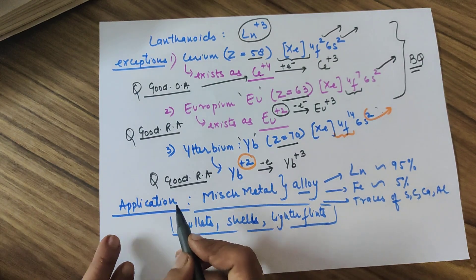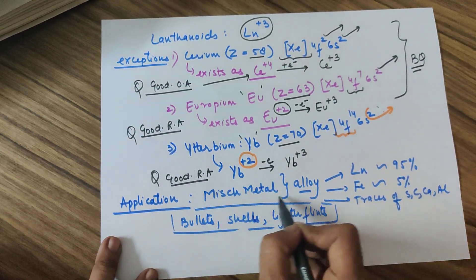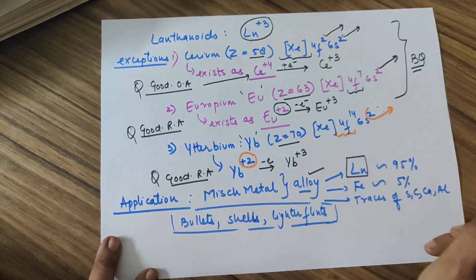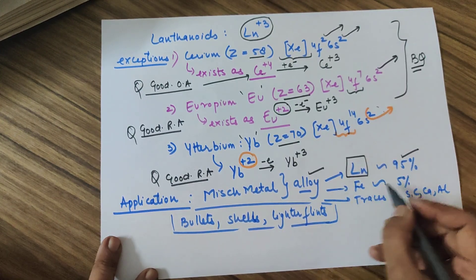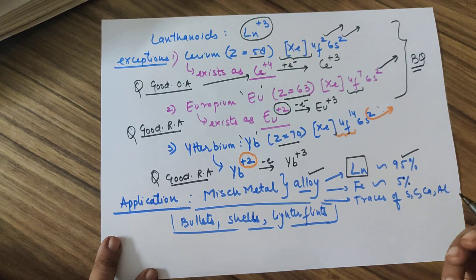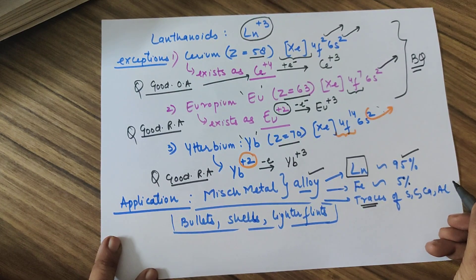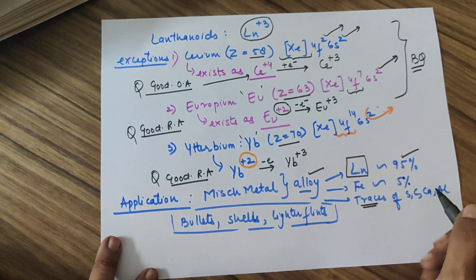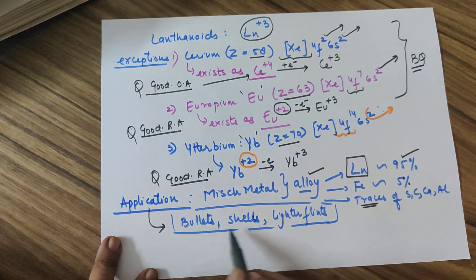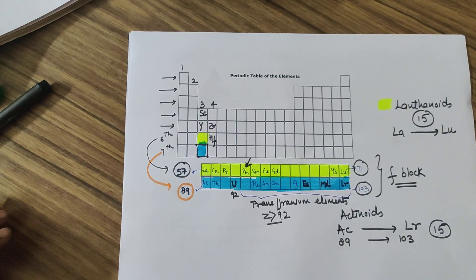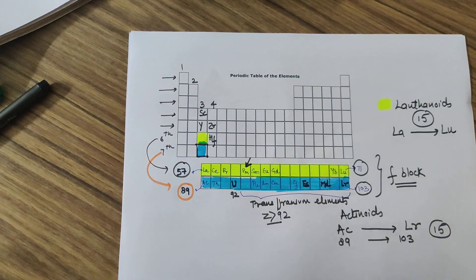Uses of lanthanoids: misch metal is an alloy containing approximately 95% lanthanoids and about 5% iron, with very small traces of sulfur, carbon, calcium, and aluminium. Misch metal is used in bullets, shells, and light flints, so it is generally used in defense systems.